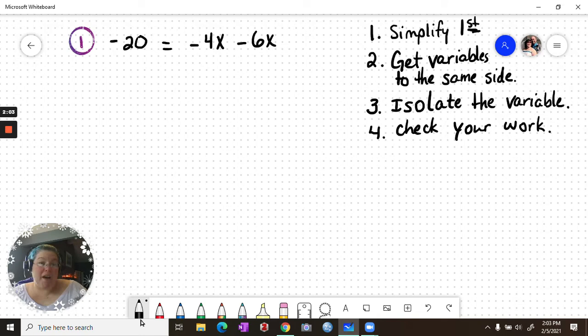So here, in simplifying, I have negative 20 by itself on the left, and it's just going to stay there for now. There's nothing else we can combine with that at this point in time. Negative 4x and negative 6x are like terms. Negative 4 and negative 6 we can add together, and we get negative 10x. Now they are already on the same side. They're on one side of our equation, they're both on the right. Negative 20 equals negative 10x.